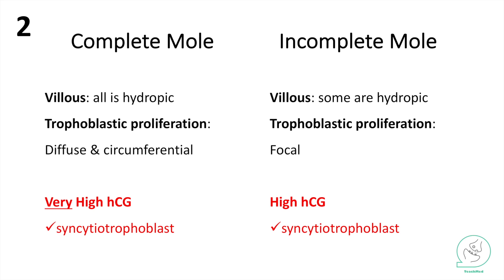Under the microscope, we said there is edematous villus and trophoblastic proliferation. In the complete mole, you get complete — or diffuse — edematous villi and complete proliferation. In the incomplete mole, you have incomplete edematous villi and incomplete proliferation, or focal.